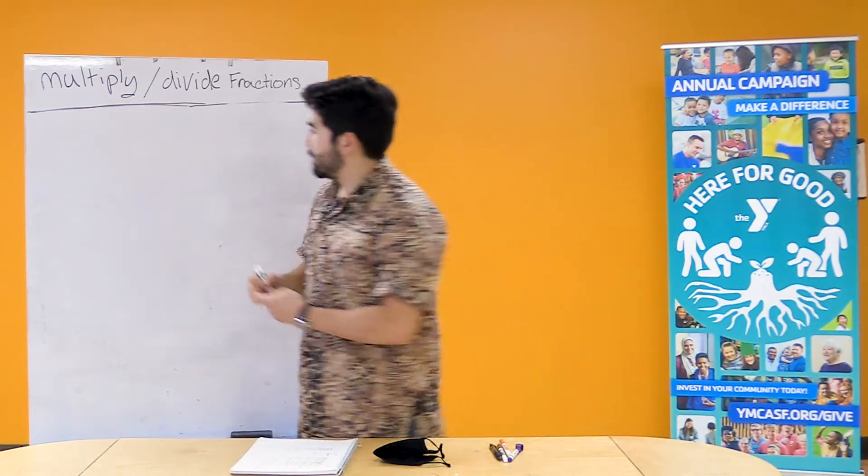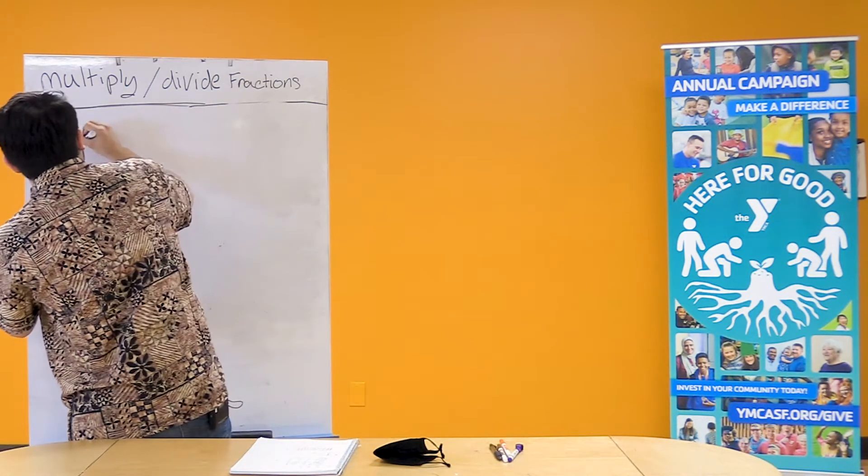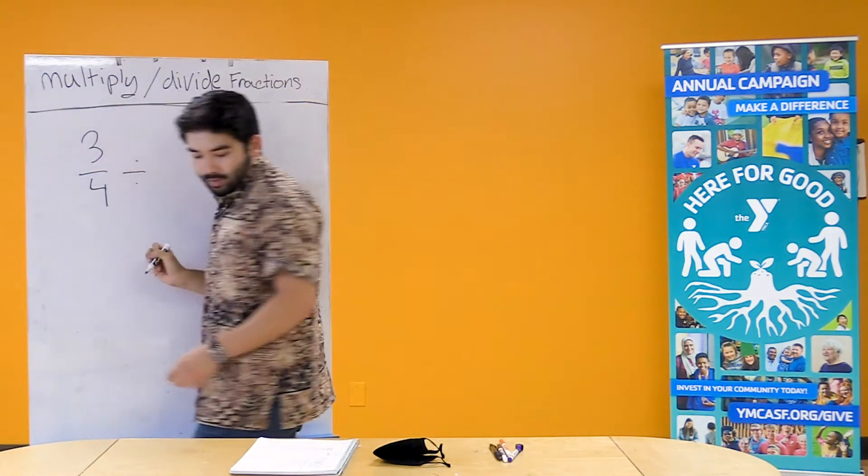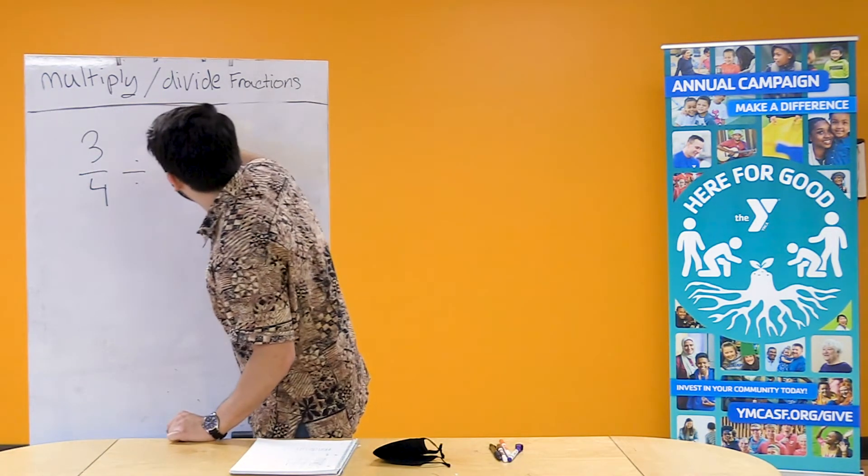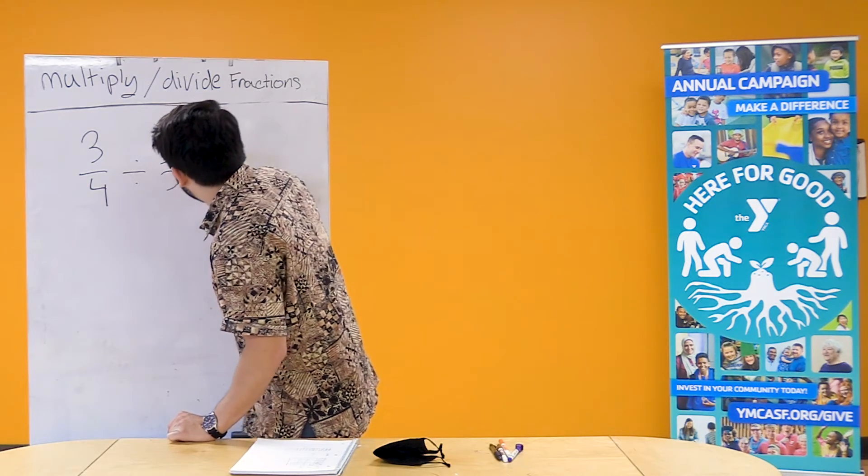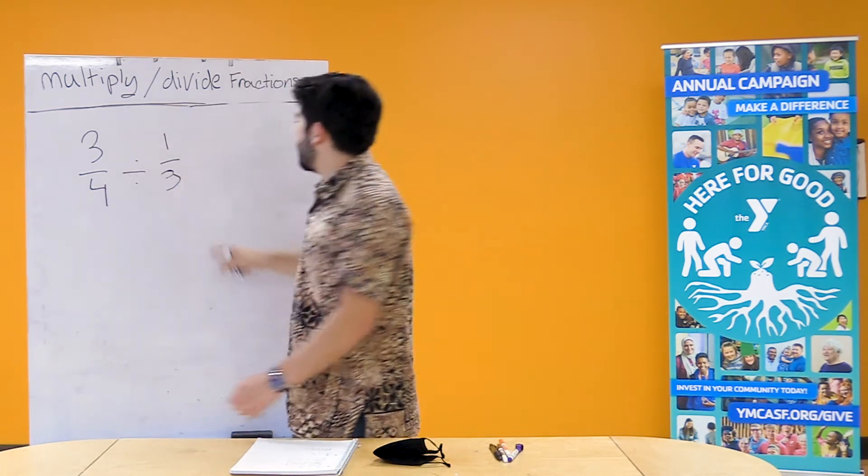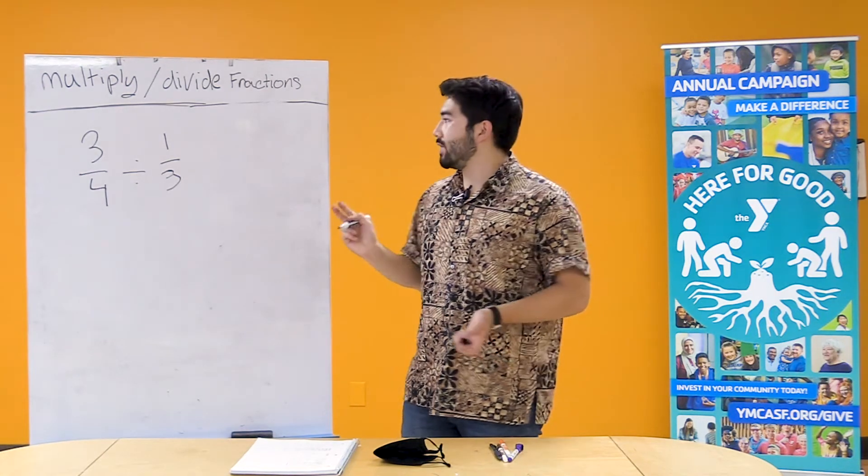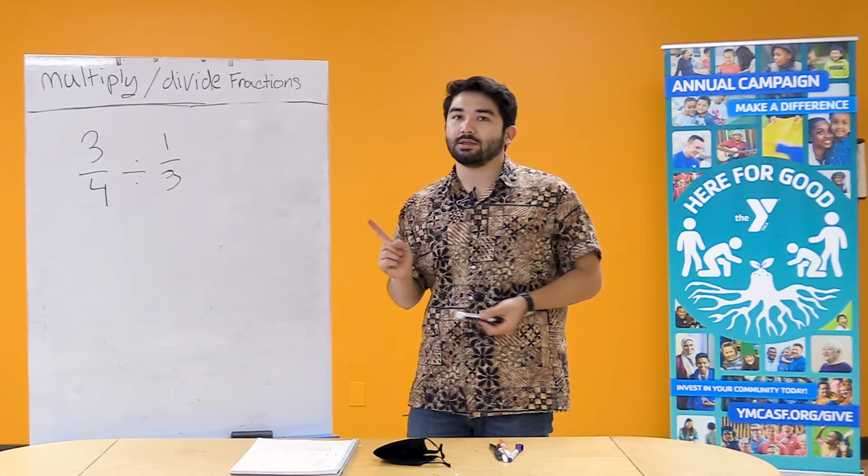Okay, so for this next problem we are going to do 3/4 divided by 1/3. Oh that's a three. Okay, so once again I'm gonna show you two different ways to solve this one problem. The first way is gonna be with the diagram.